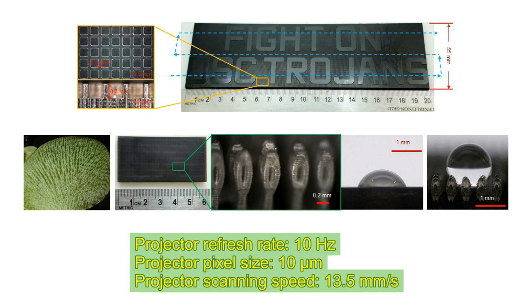The distinguishing characteristic of Hopping Light is its 100 times lower requirement for projector refresh rate. For example, 10 hertz for 13.5 millimeters per second scanning speed without motion blur.